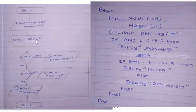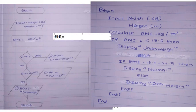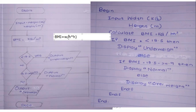The formula says BMI is kg divided by meters squared. So you can write BMI is equal to kg divided by m squared, which is weight divided by height into height.